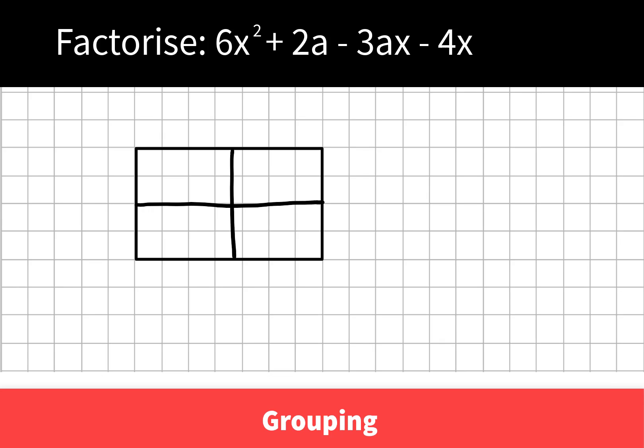Example 3 by grouping. Factorize 6x squared plus 2a minus 3ax minus 4x. There are four parts to this, and that's how we might recognize the by grouping one. We know the answer is going to be two binomials.